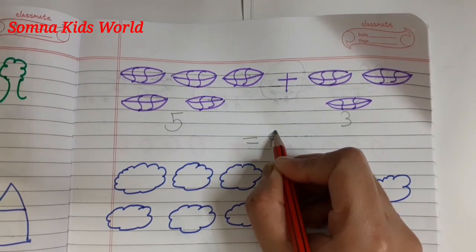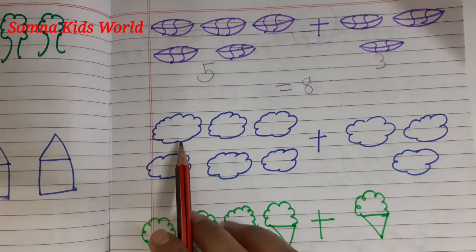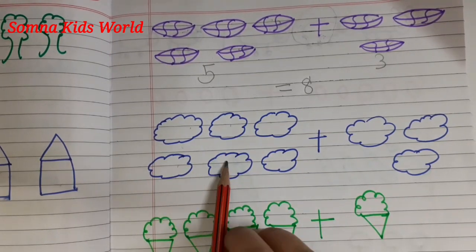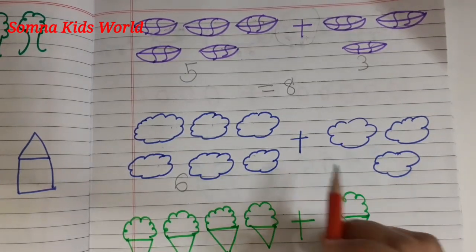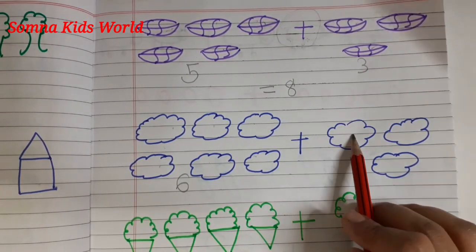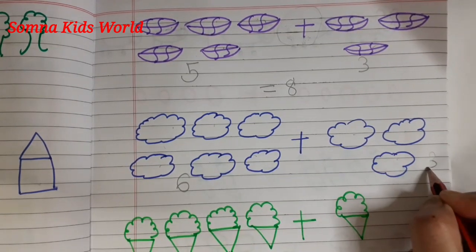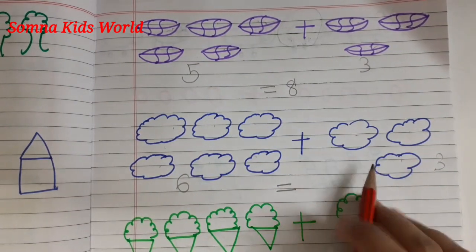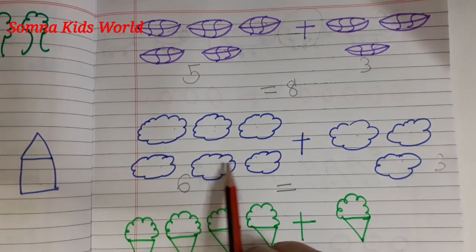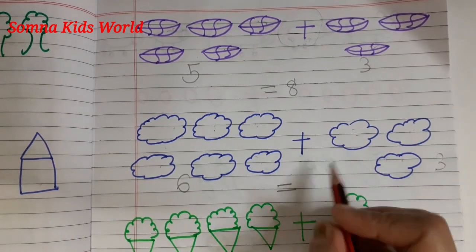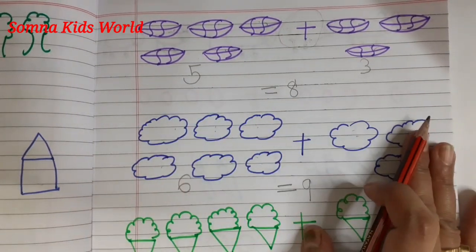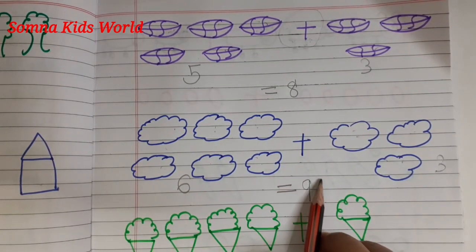Next you can also see clouds. This side we are having how many clouds — one, two, three, four, five, six — six clouds. Plus this side we are having how many clouds — one, two, three — three clouds. Now equal to, total you have to count: one, two, three, four, five, six, seven, eight, nine. Total we are having nine clouds. Count this side first, then this side, then count the total and write how many clouds we are having.